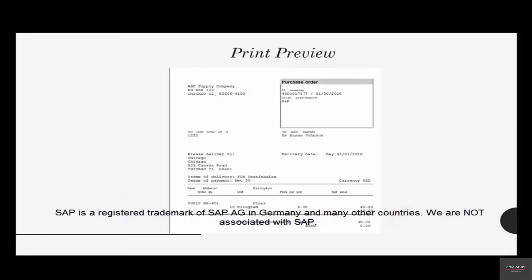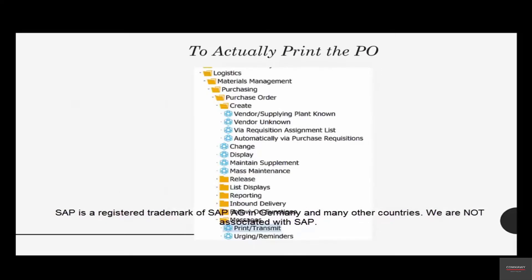This is just the print preview. If you want to actually print it, it's done from a separate transaction — not from here. The reason is that there should be a log of printing a purchase order. That's why it's a separate transaction, which also has the flexibility of running in online mode or in batch mode. We'll cover more about those in later videos.